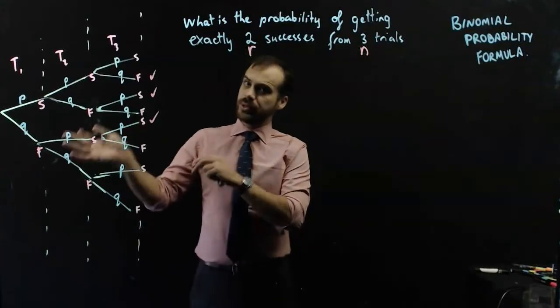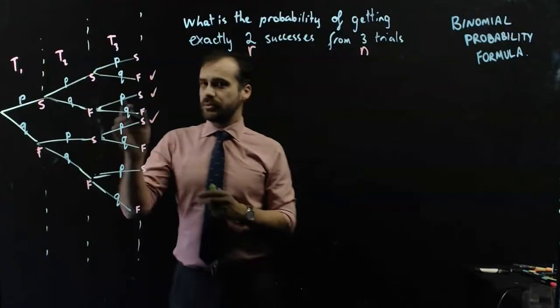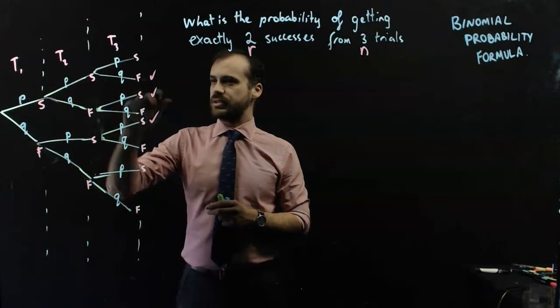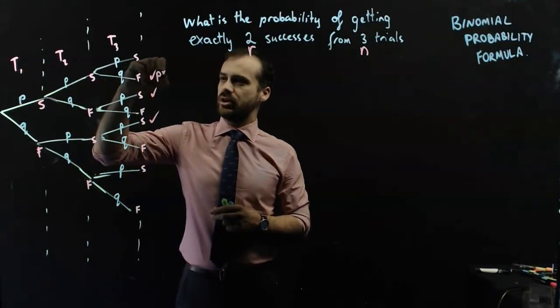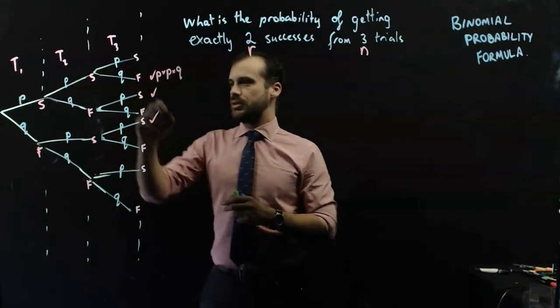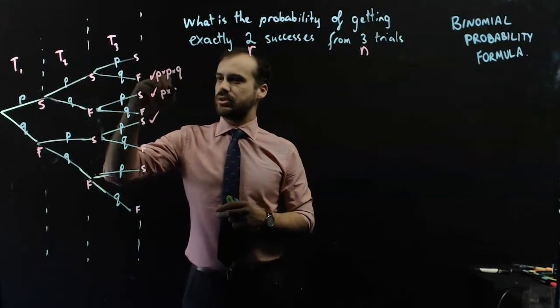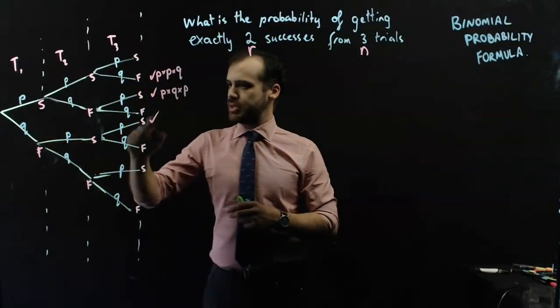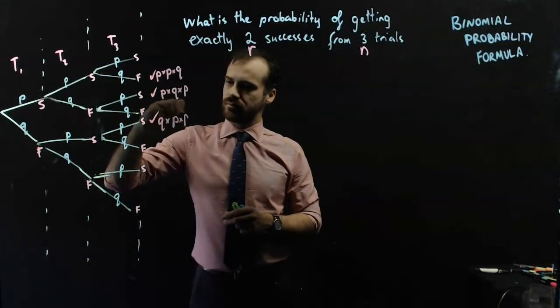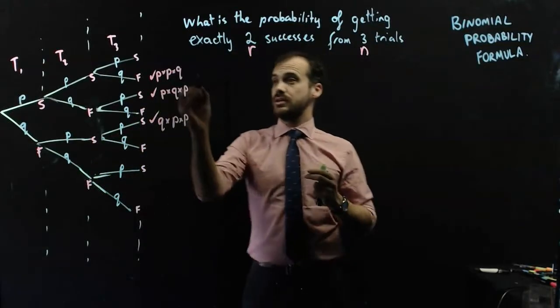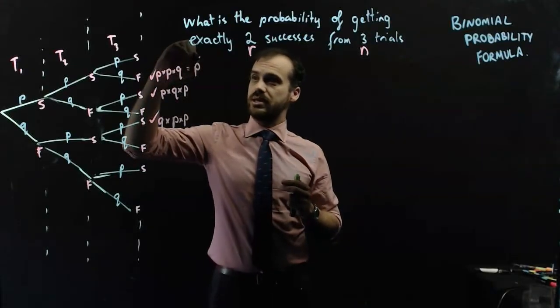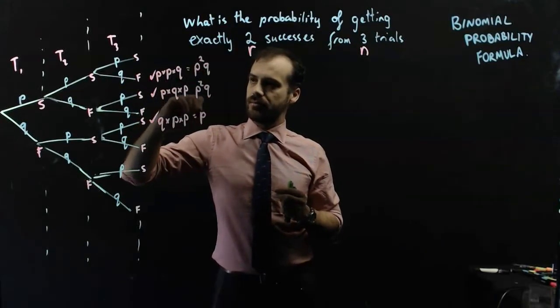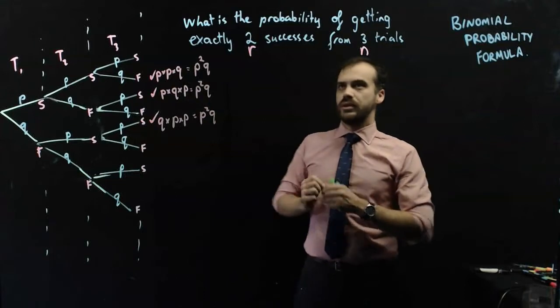Now what's the probability of any of those branches happening? Well the probability is the probability of the first thing happening times the probability of the second times the probability of the third. So P times P times Q. What about this one? P times Q times P. And the probability of this one? Q times P times P. Now hopefully you can see that they're all the same thing. And they are all therefore equal to P squared Q. P squared Q. P squared Q.